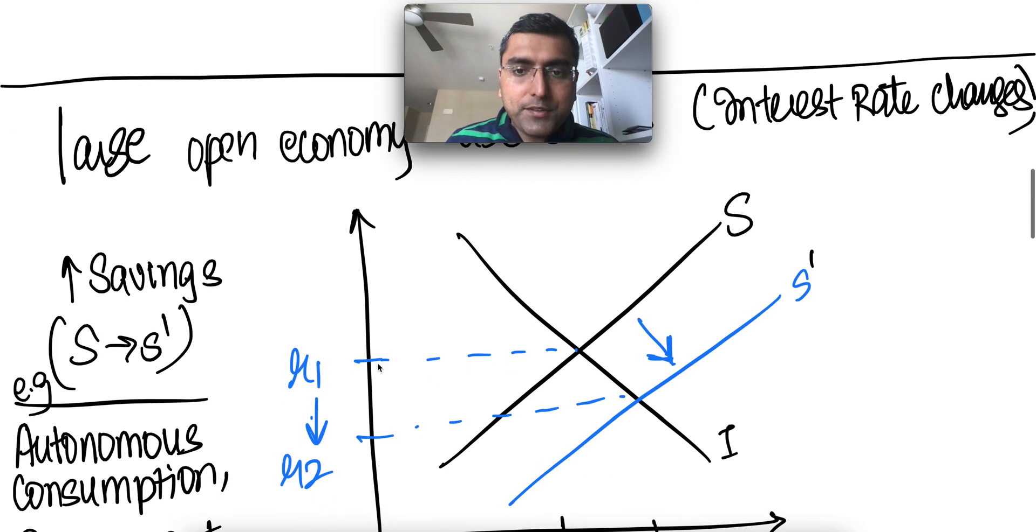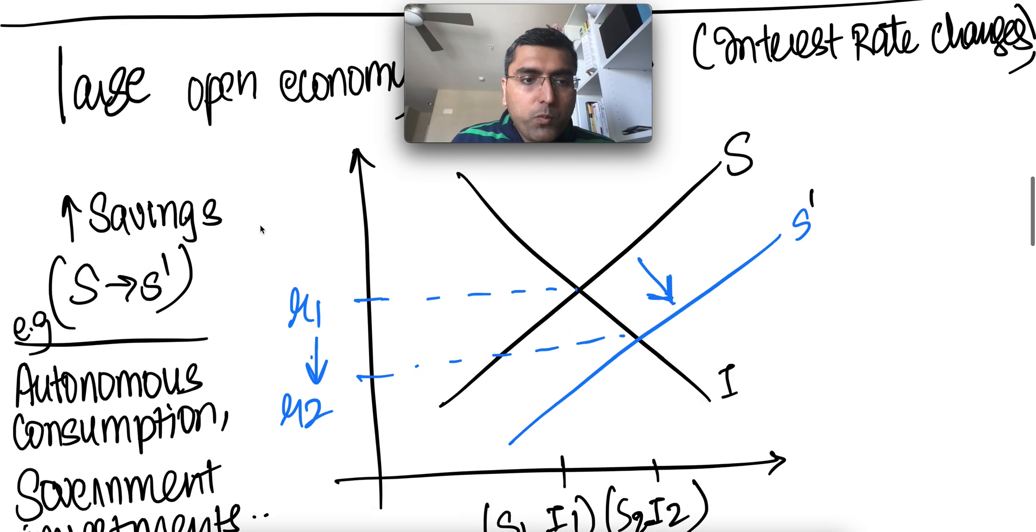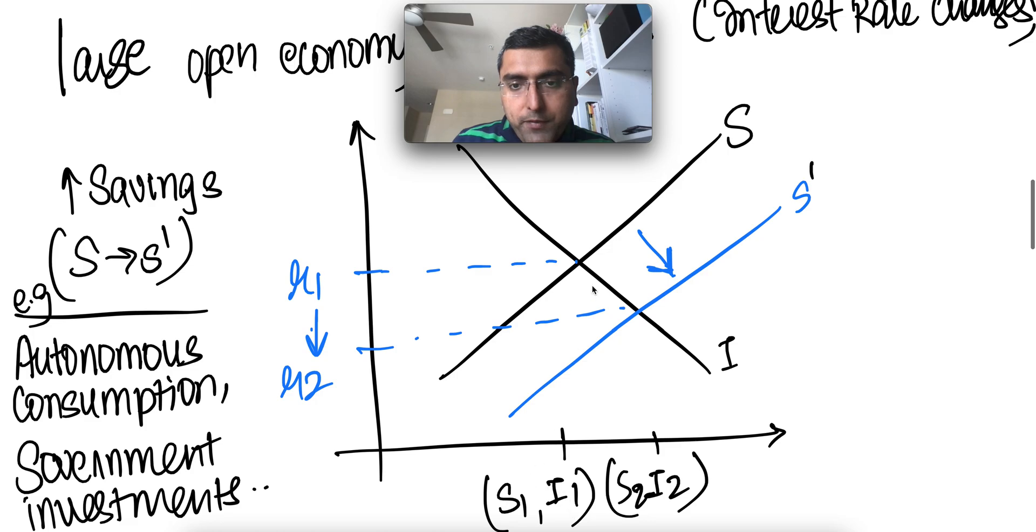So now let's look at how the graphs look in a large open economy. In a large open economy, when savings go up, S moves from this black line here to this blue line. Savings go up, interest rate falls. Interest rate falls because the overall pair of S1, I1, which is this point, goes to S2, I2, which is a higher point.